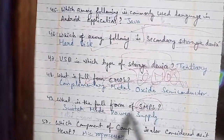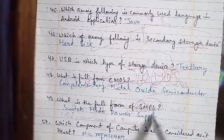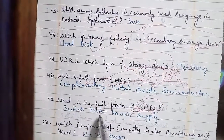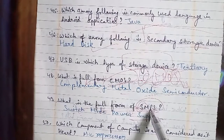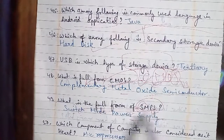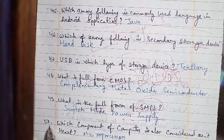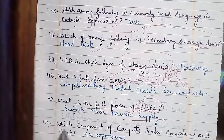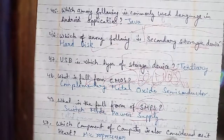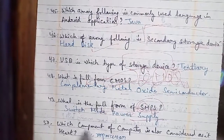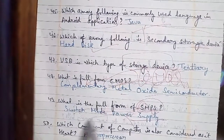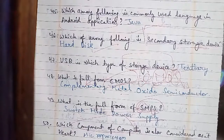Question number 50: which component of a computer is also considered its heart? The answer is the microprocessor. The microprocessor is referred to as the heart of a computer.